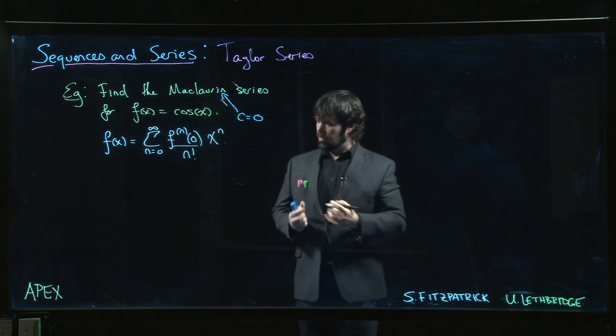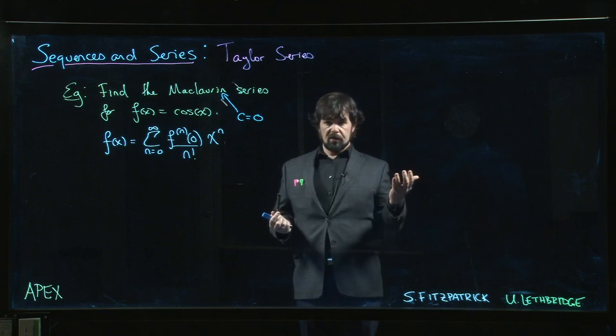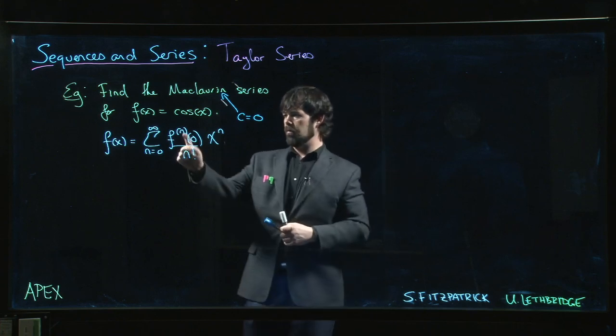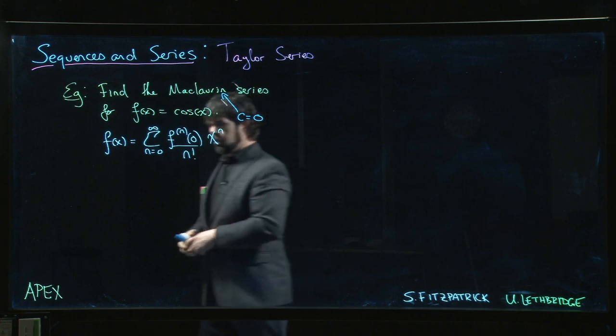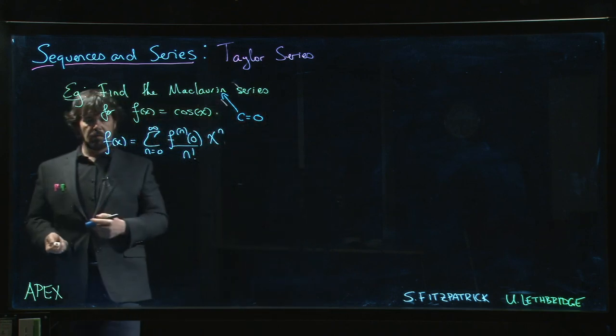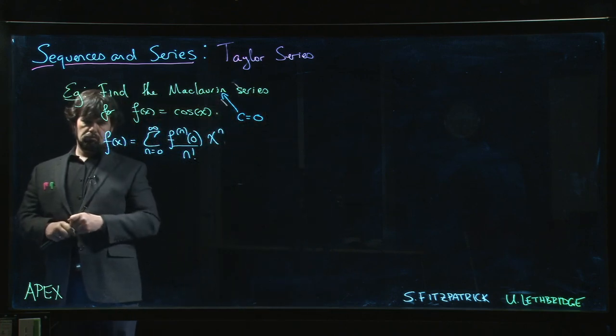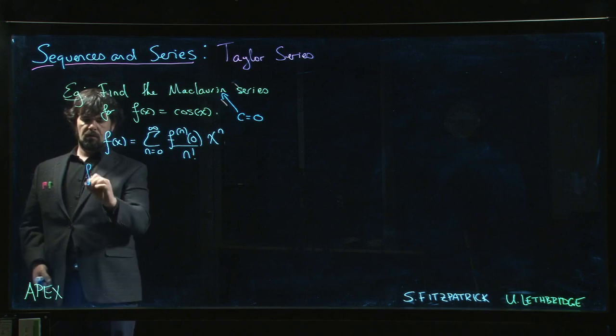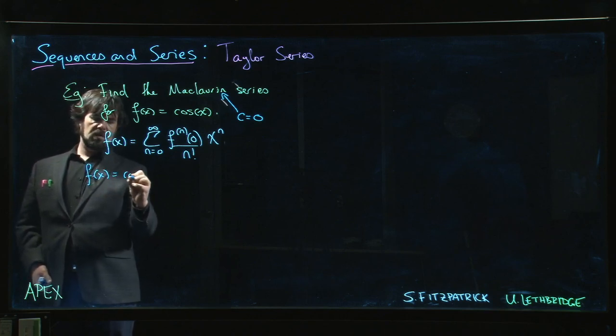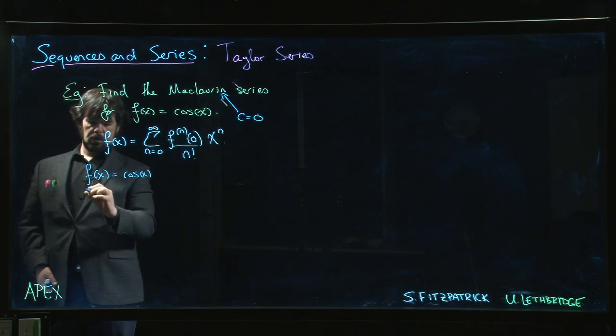So what we need to do in order to actually get the series representation for cosine is we've got to figure out what these derivatives are. So we start computing and we look for patterns. And of course, for cosine, finding a pattern is not hard at all.